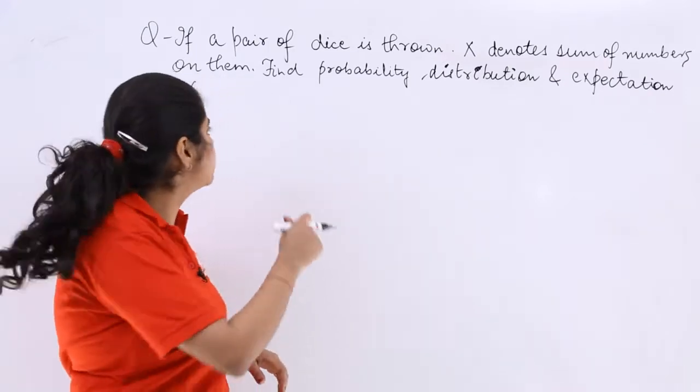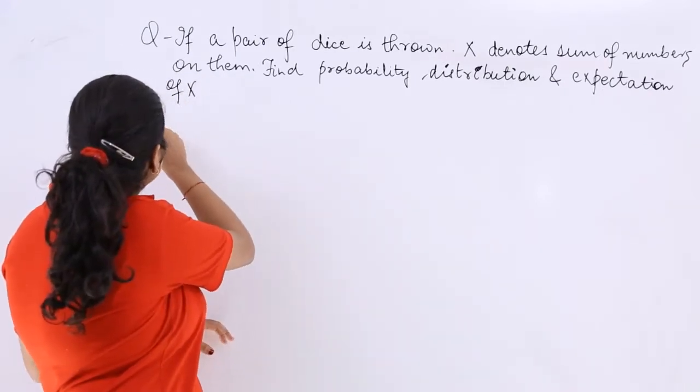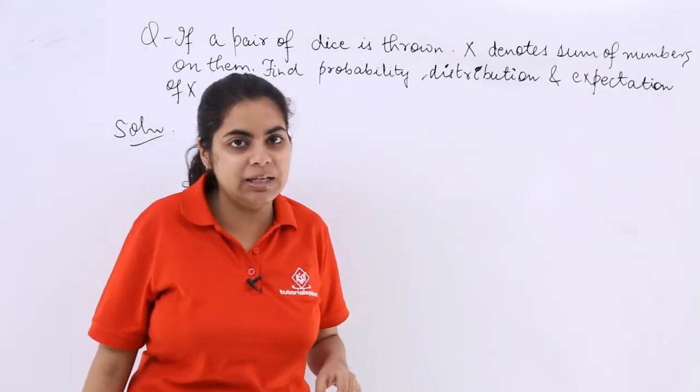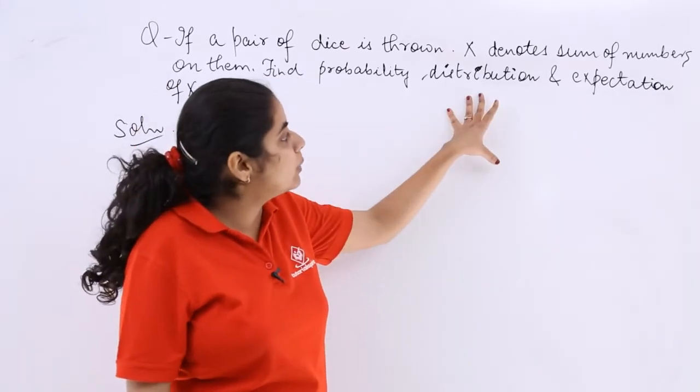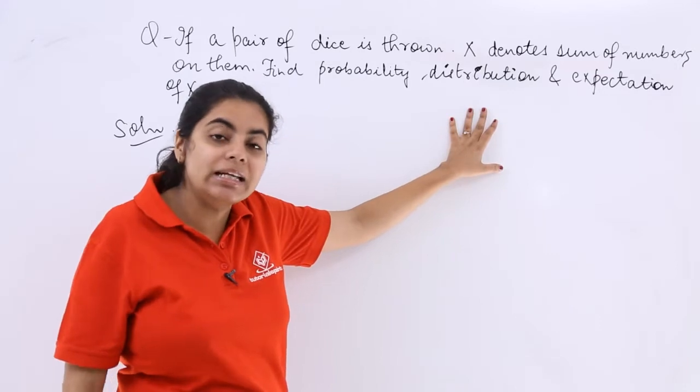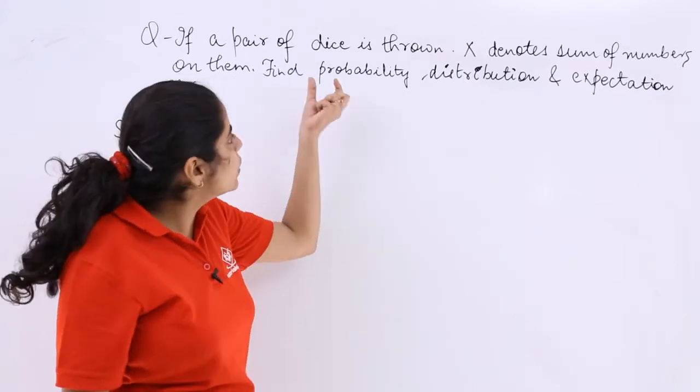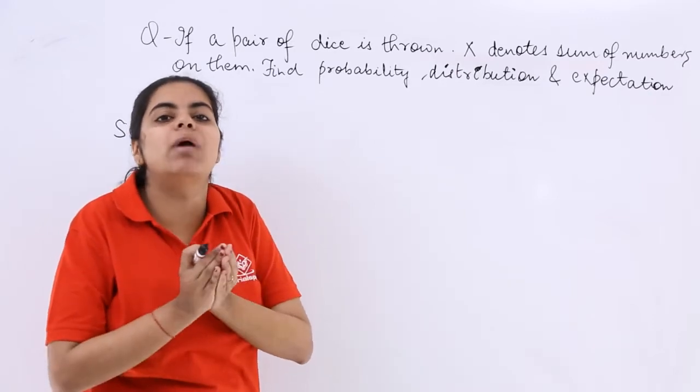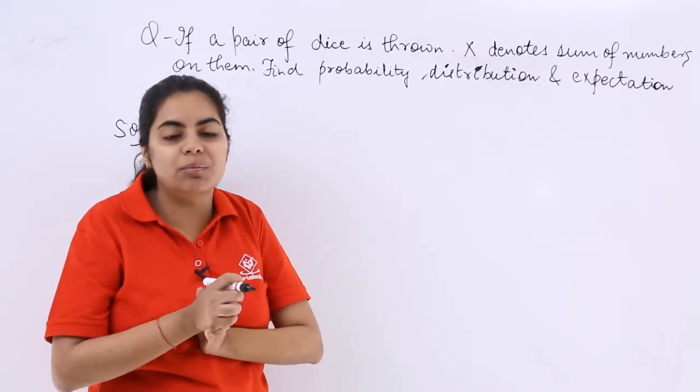So let me write solution and let me make clear how to do these kind of questions. Expectation is mean of a discrete random variable that we are talking about and probability distribution we have already studied in the previous videos. So it is saying that a pair of dice is thrown and we have to see about the sum of numbers which can appear on the dice.